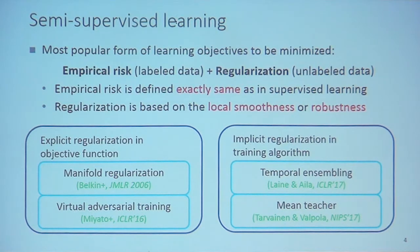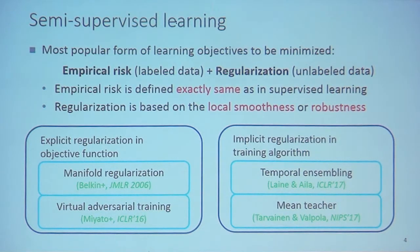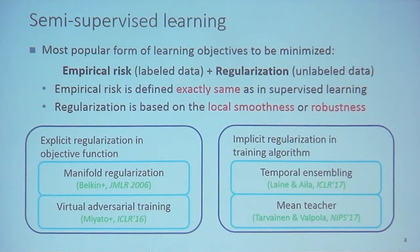I will first explain semi-supervised learning. Until now, the most popular form of learning objectives in semi-supervised learning to be minimized is the empirical risk, which considers labeled data, and regularization, which also considers labeled data. The definition of the empirical risk is the same as in supervised learning, just that we don't have that many labeled data. Regularization is usually based on local smoothness or robustness.